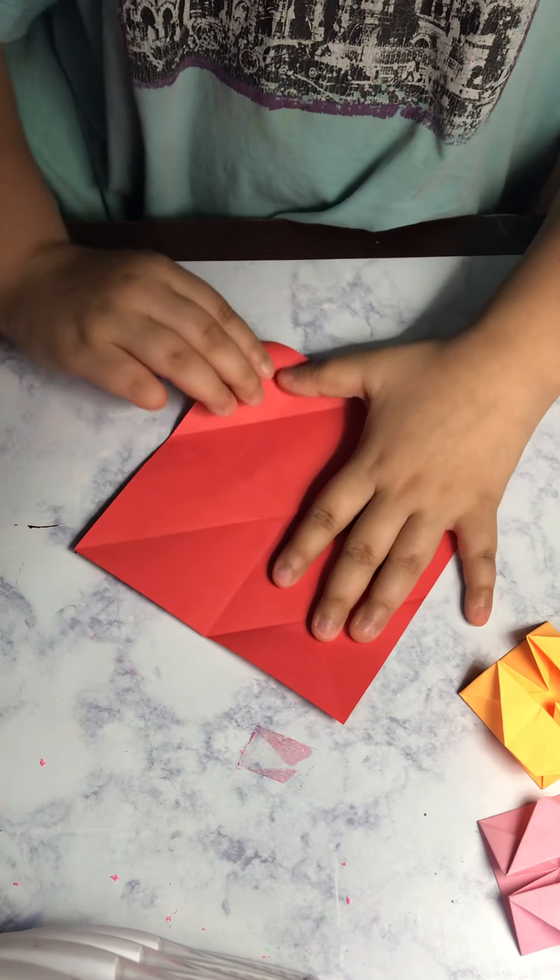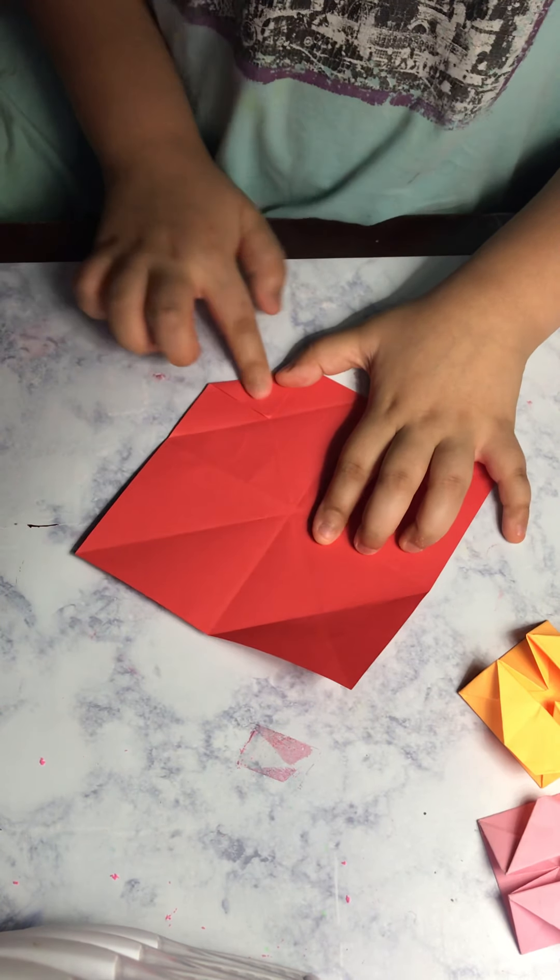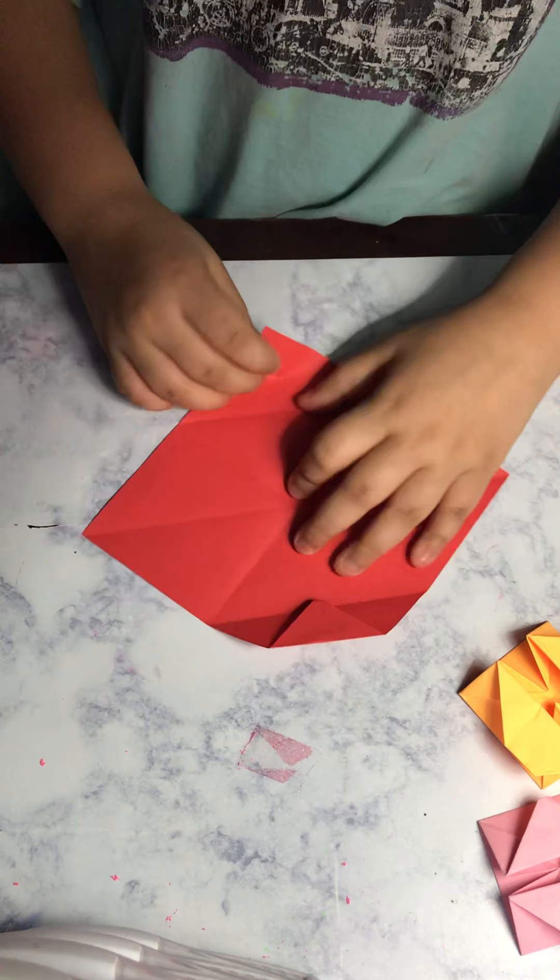You unfold, take the small little corner over here. Do it to the crease you just made. Same thing on the other side.